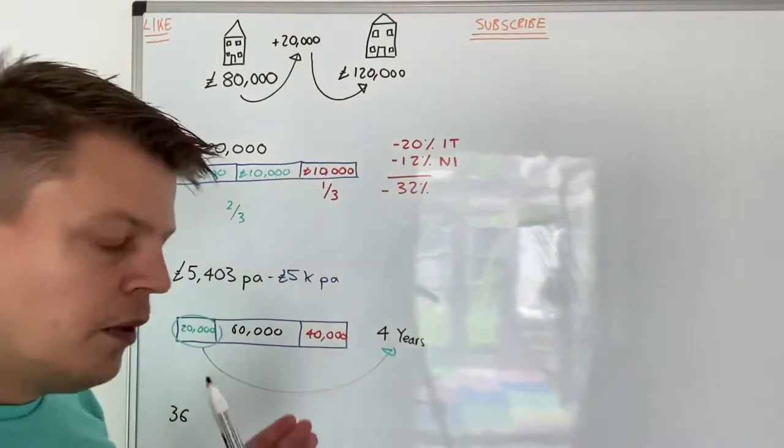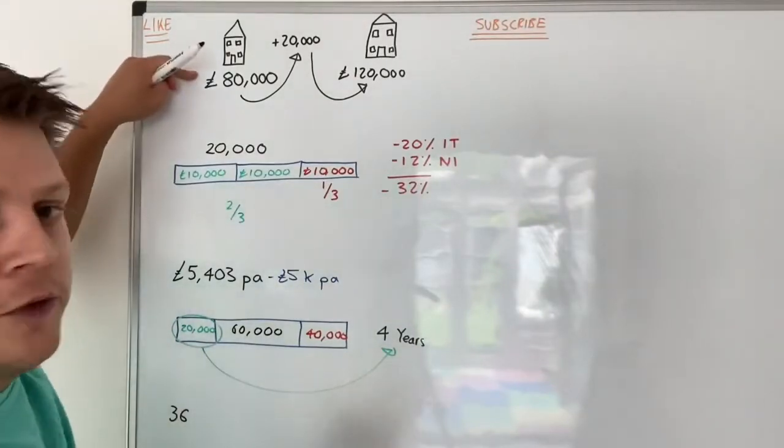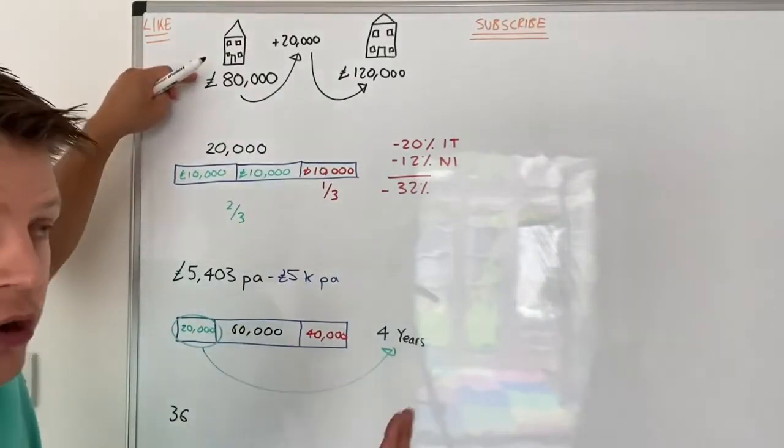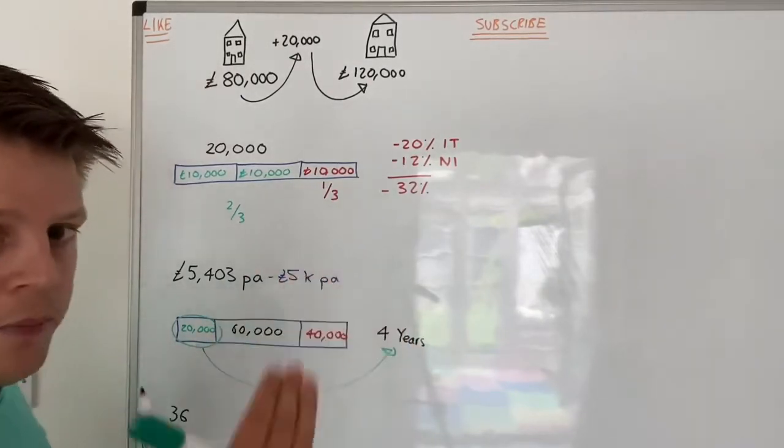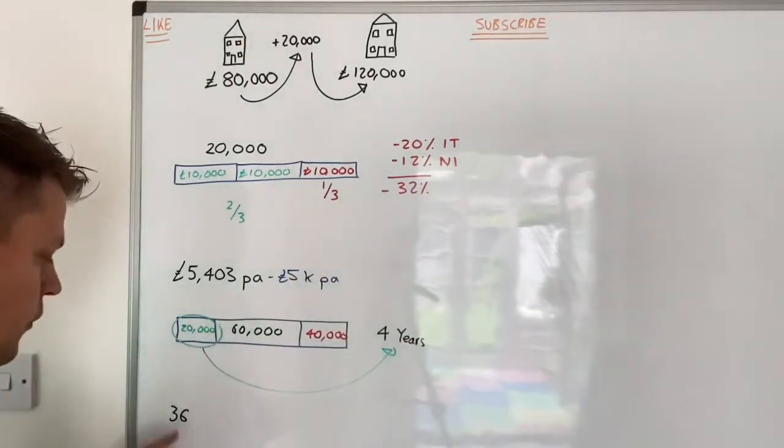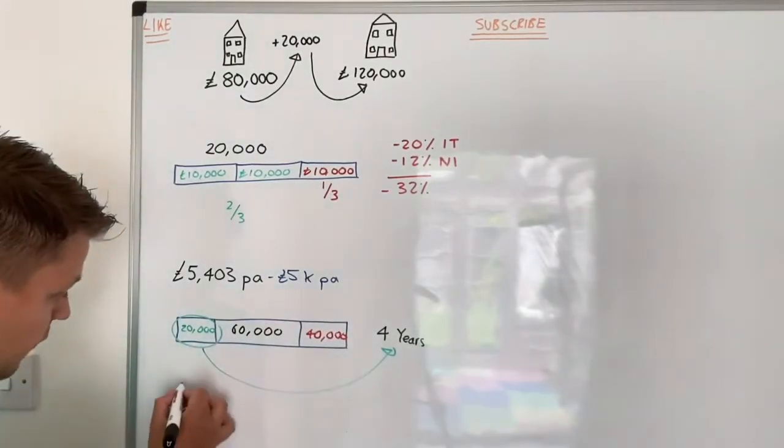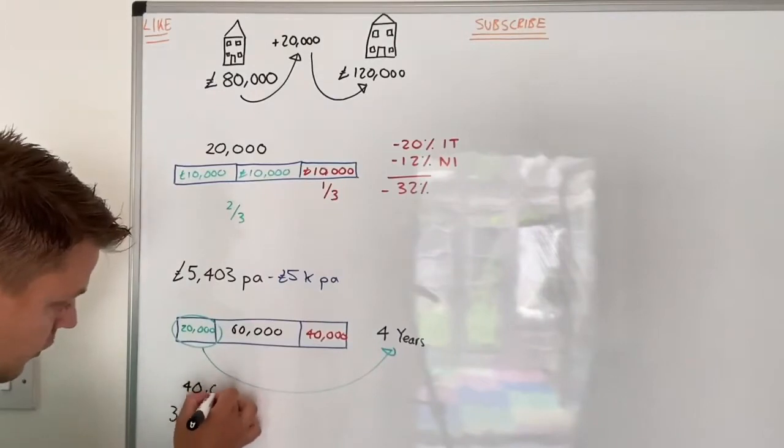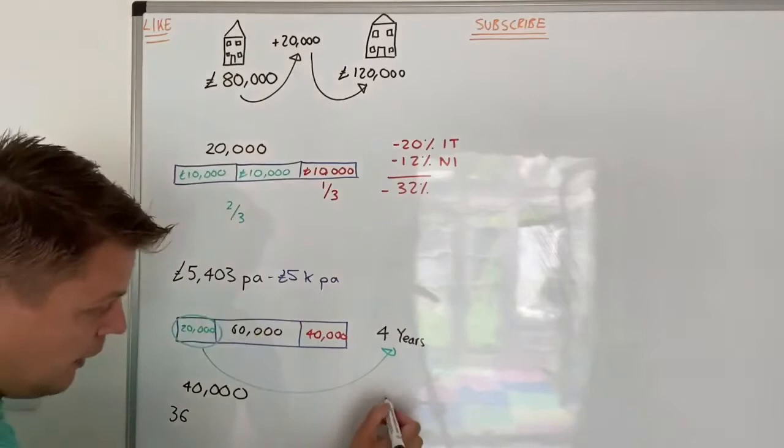£20,000 after four years, assuming you're a basic rate taxpayer paying 20% income tax and 12% national insurance. Now, you might turn around and say, that doesn't account for the deposit for the £80,000 house, assuming you're doing a 75% loan-to-value loan. So to get to £40,000 for the refurbishment money and the deposit, it's actually going to be eight years.